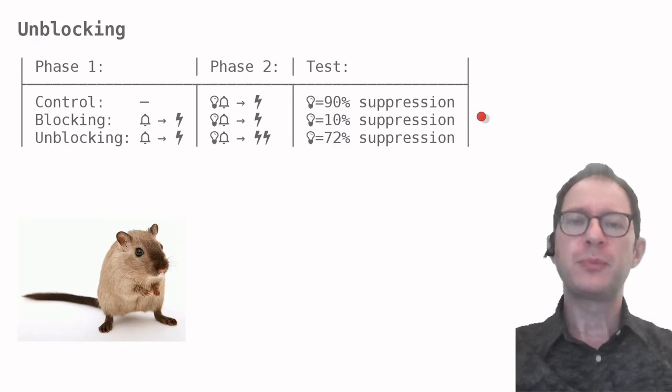The third group was similar to the blocking group, but the shock in phase 2 was larger, as indicated here by the double bolt symbol. We call this the unblocking group, and the reason is that rats in this group did become afraid of the light, even if they were already afraid of the sound. We can see a suppression ratio of 72%, almost as high as in the control group.